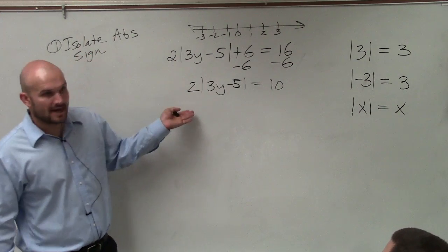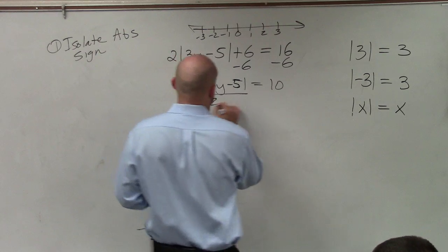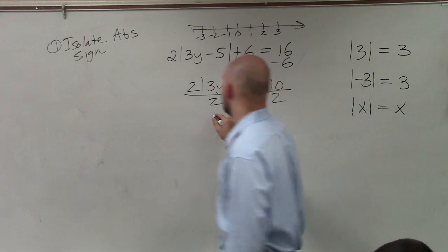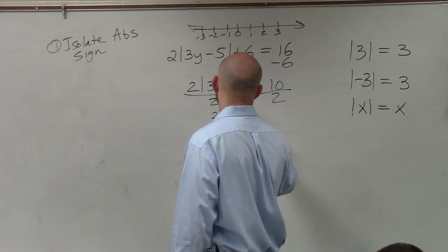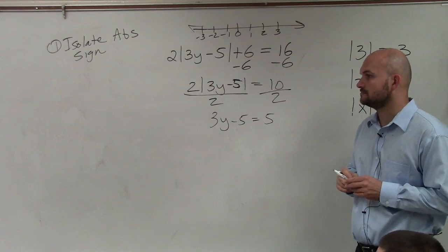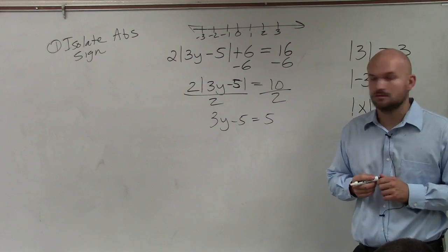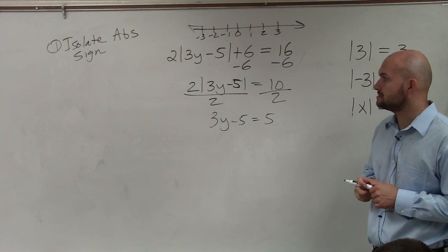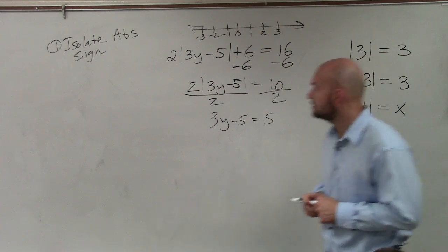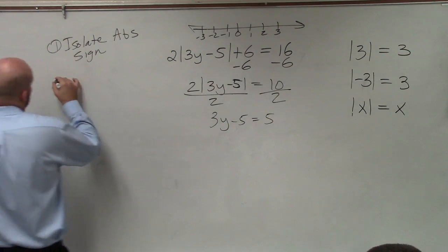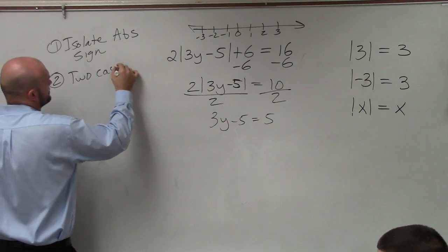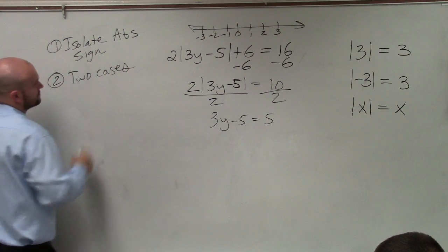Then undo multiplication by dividing both sides by 2. Now we have the absolute value of 3y minus 5 equals 5. The next step, Step 2, is to present your two cases.